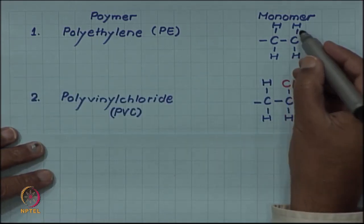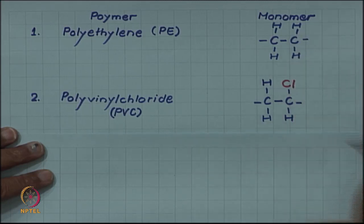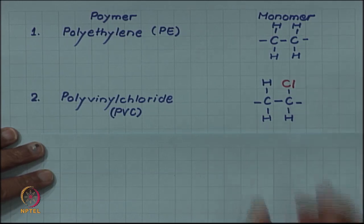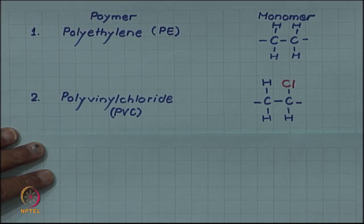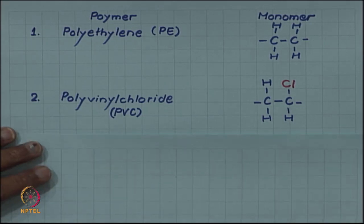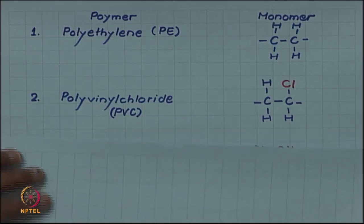If one of the hydrogens is substituted by a chlorine atom, then what we get is polyvinyl chloride. This is the monomer of polyvinyl chloride with one of the hydrogen atoms substituted by a chlorine atom.